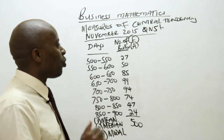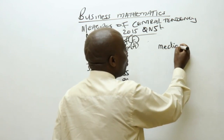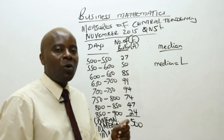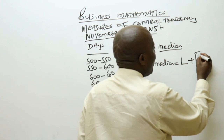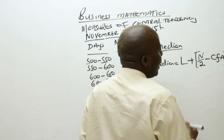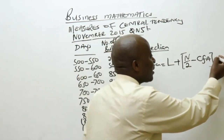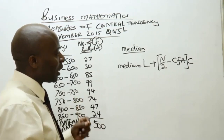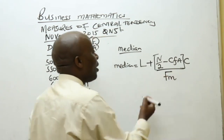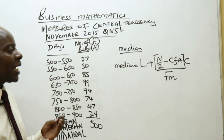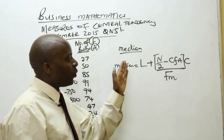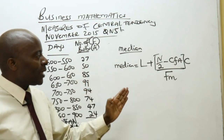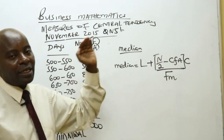To get the median, you must recall this formula: Median equals the lower class boundary, plus — in brackets — N divided by 2, minus CFA (cumulative frequency of the class above), multiplied by the class size, and this term divided by the frequency of the median class.